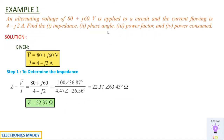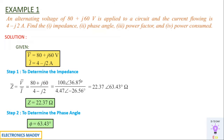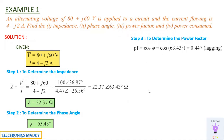We have found the impedance. Next, find the phase angle: whatever phase angle is associated with the impedance is the phase angle of the circuit. So φ = 63.43°. Power factor is cos φ = cos 63.43° = 0.447. Since it is a series RL circuit, I is lagging behind V, so we write this as 0.447 lagging power factor.